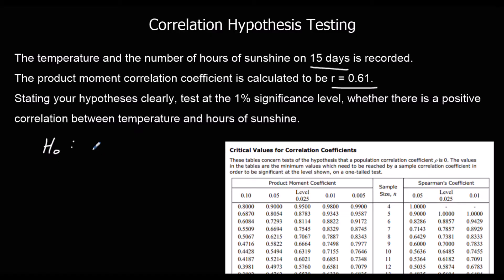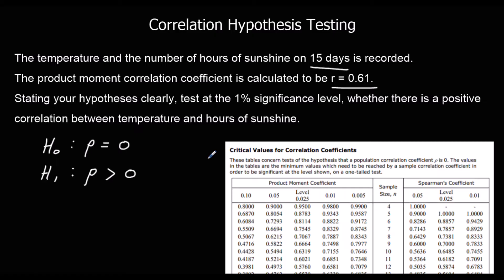We're going to start with our null hypothesis H0. The formula book states that the correlation coefficient is zero, so the null hypothesis is that there is no correlation. Our alternative hypothesis is that there is a positive correlation, which means it is bigger than zero. So those are our hypotheses and we're going to test at the 1% significance level.